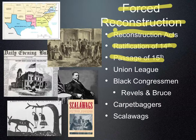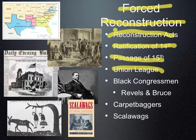Now that we have all these new Black voters, somebody has to teach them how to vote. That's where a new organization called the Union League comes into existence. The Union League was founded to educate Blacks on voting — to teach them what the issues are, how to go vote, what you're going to have to do when you get to your polling place — because Blacks had never voted before. This was all brand new.